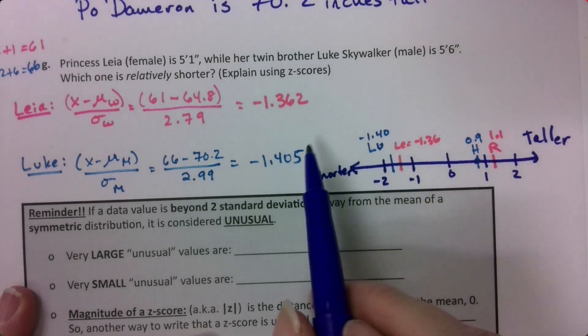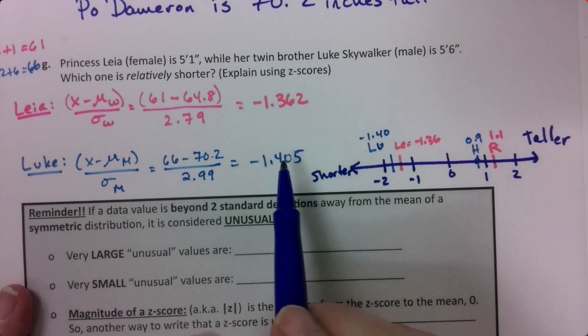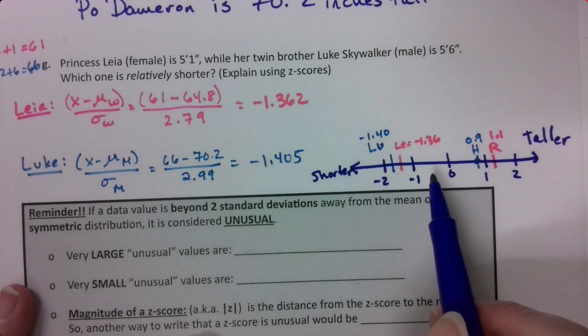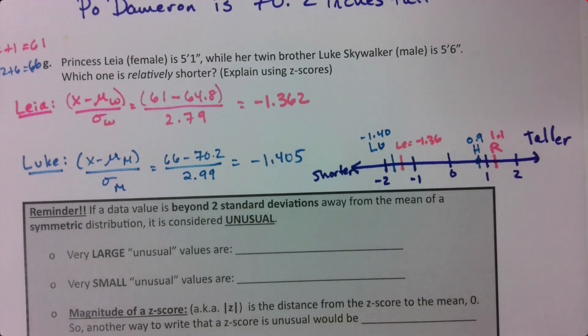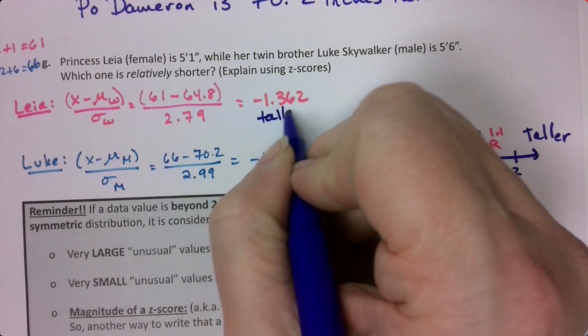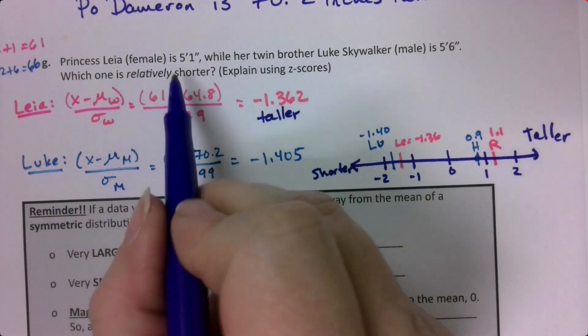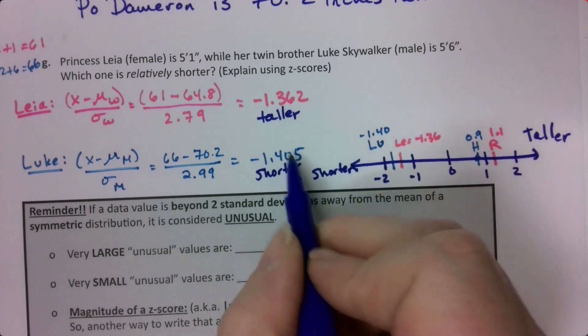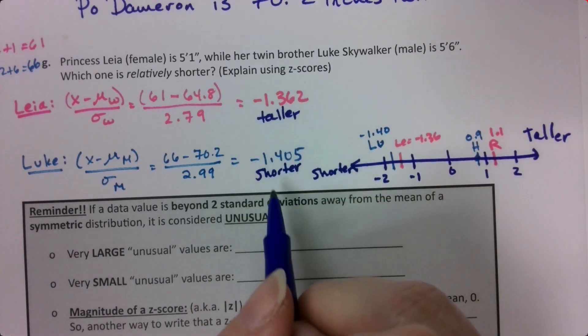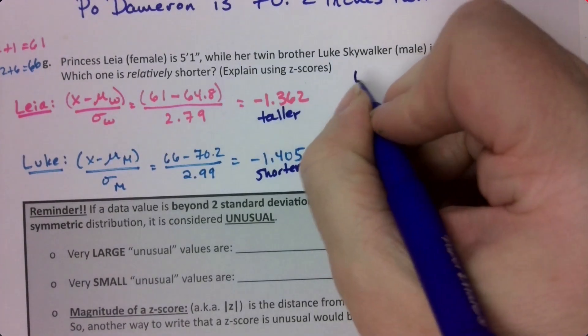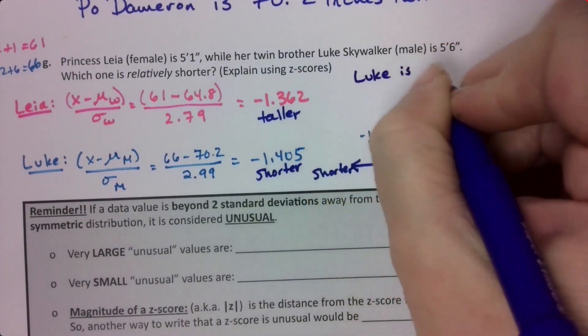It's not that her value is larger numerically if you ignore negatives, but you have to think about it as on the number line. She's over to the right, he's over to the left, so she's taller. He is shorter. Luke is relatively shorter.